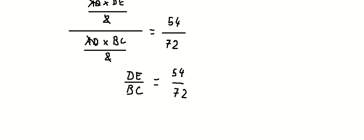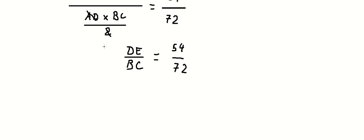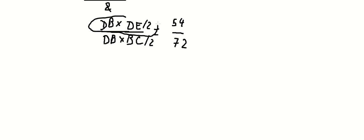Now we need to multiply by DB in here and here. Then we divide by 2 in here and here, so this one is the area of triangle DEC.